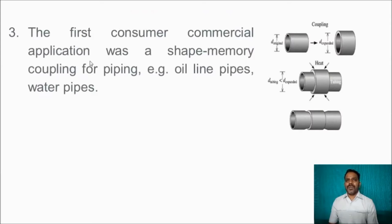The first commercial consumer application was shape memory coupling or piping, for example oil line pipes or water pipes. A coupling material with a larger radius covers two joining tubes. Applying heat energy or a thermal process causes it to tightly bind with the tubes, acting as the best coupling for the two connecting tubes.